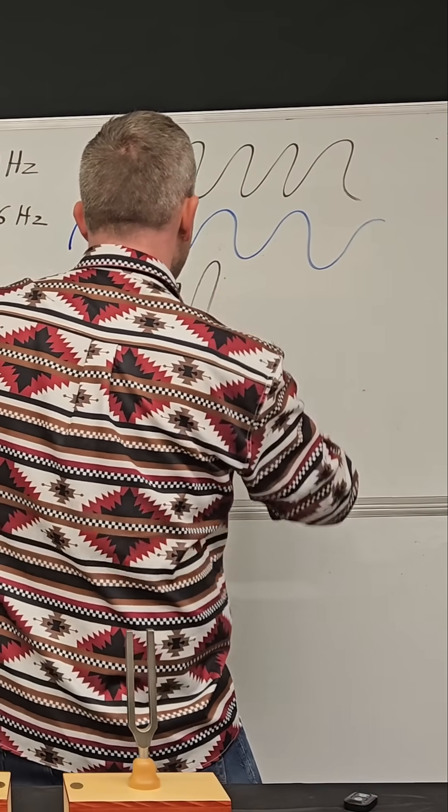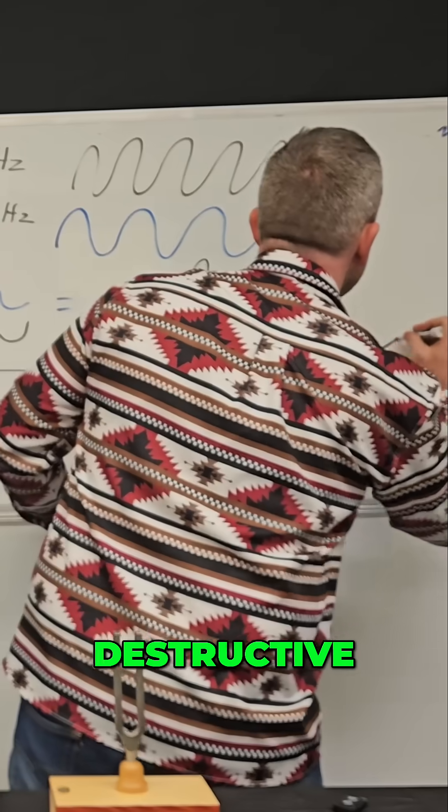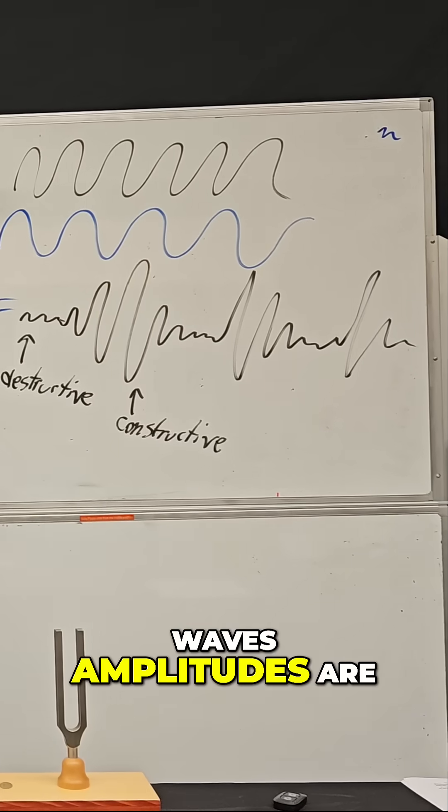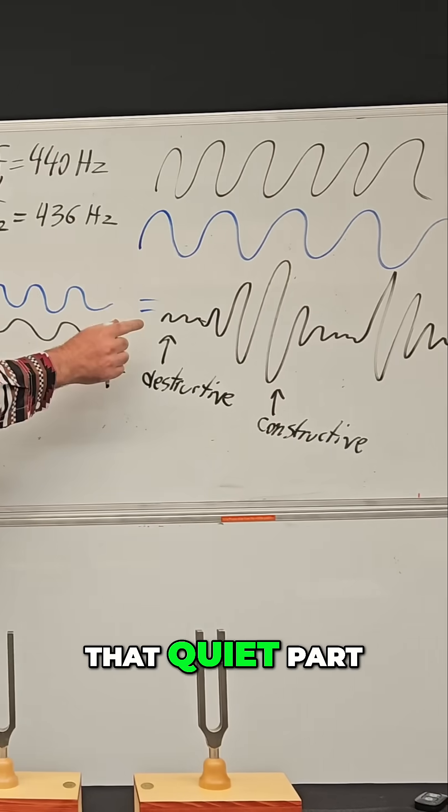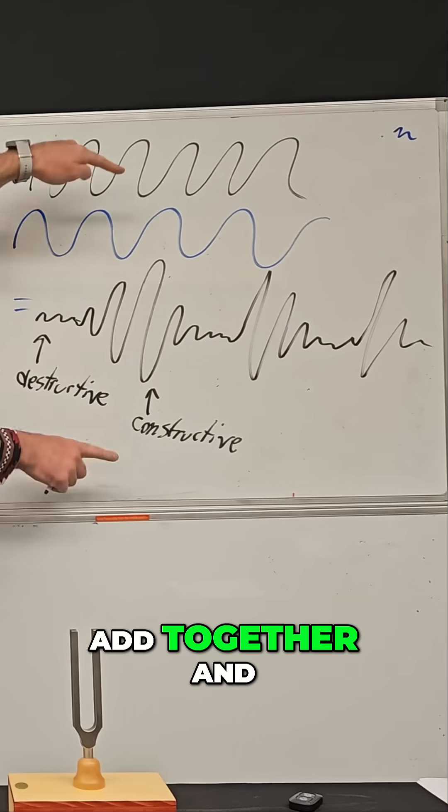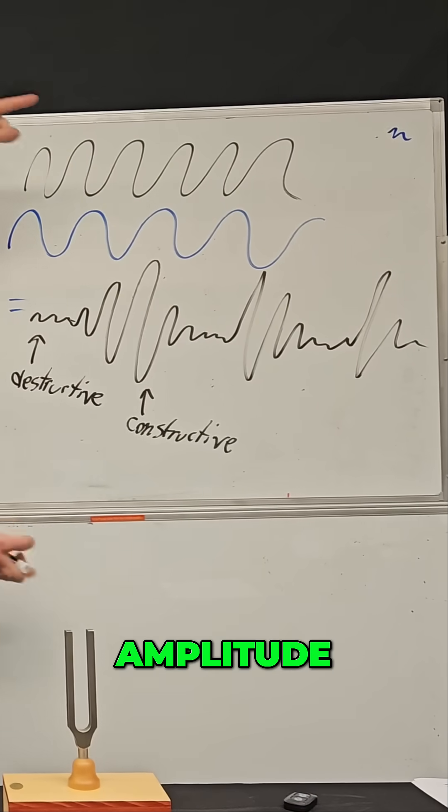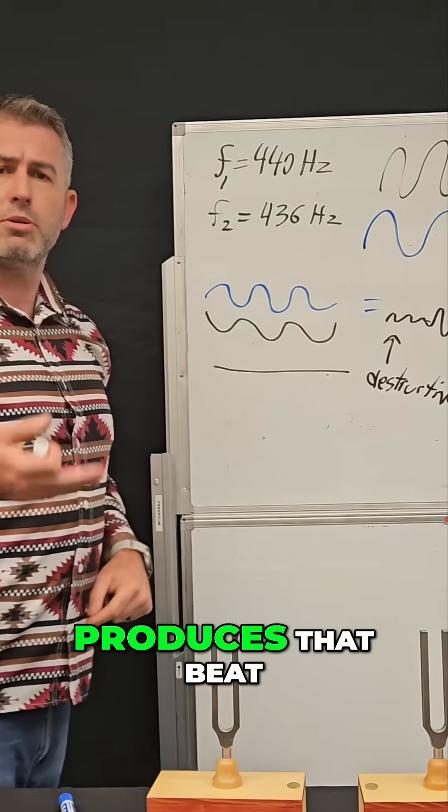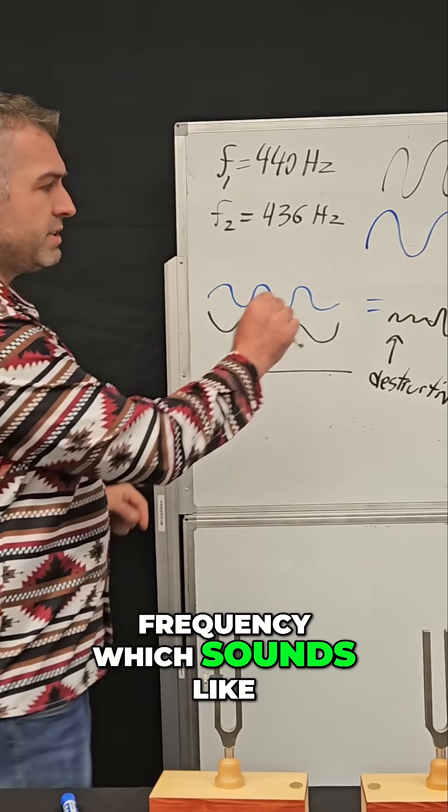Then destructive, constructive, destructive. The sound waves' amplitudes are sort of canceling out and you hear that quiet part, and then they add together and you hear that louder amplitude. Quiet, loud, quiet, loud, and that's what produces that beat frequency.